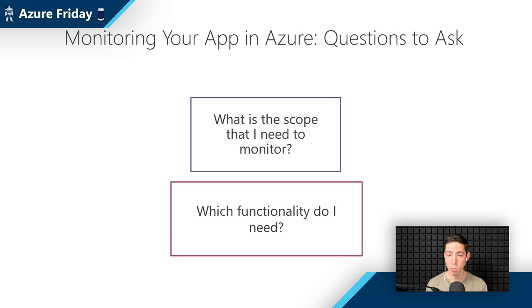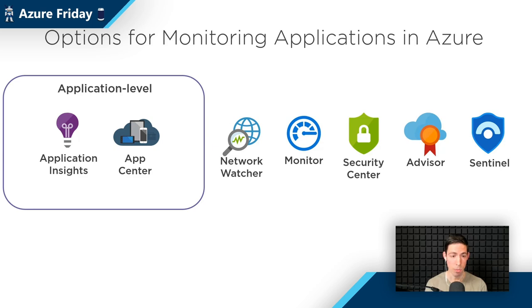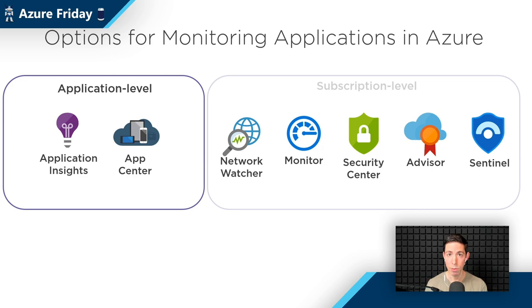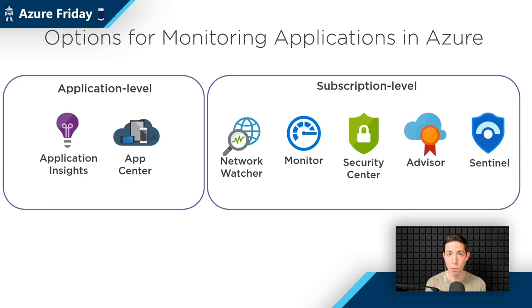These services — Application Insights and Visual Studio App Center — you'd use to monitor at the application level, so a single application. And if you need more, so you need to monitor your subscription, resource group, or another pairing of services, then you would use Azure Monitor, Network Watcher, Security Center, Advisor, and also Azure Sentinel, because it's also an overarching service that can monitor your whole subscription.